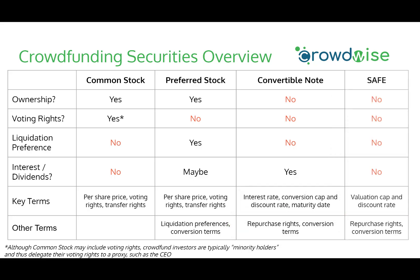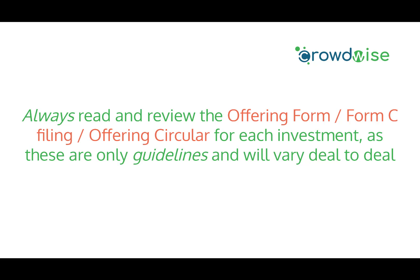Last but not least, there's the SAFE — the simple agreement for future equity. This is essentially a convertible note, only there's no interest or dividends. If there's anything to take away from this lesson, it's that you should always read and review the offering form, Form C filing, or the offering circular for each investment, as what we are covering are only guidelines and will always vary deal to deal.